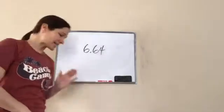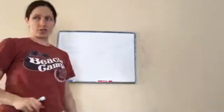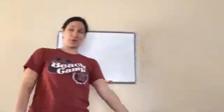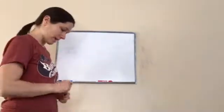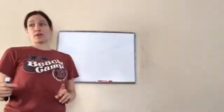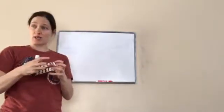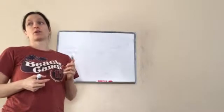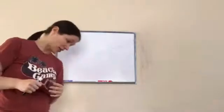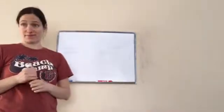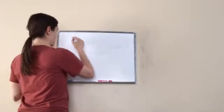Okay, sixth grade lesson 64 — this is on classifying quadrilaterals. Do you remember what a quadrilateral is? It's a shape with four sides. But did you know there are many different names that get even more specific? Like squares and rectangles — those are just two you've learned growing up. There are actually four more. Okay, so draw these shapes on your paper with me.